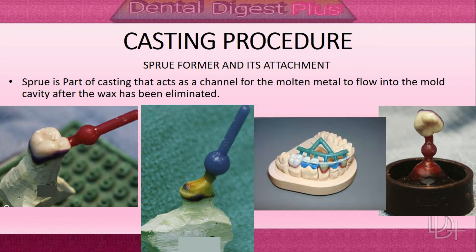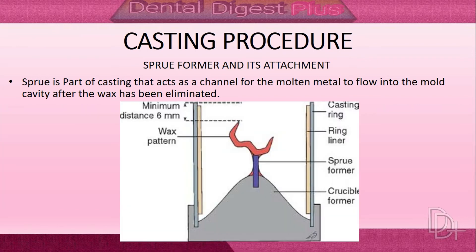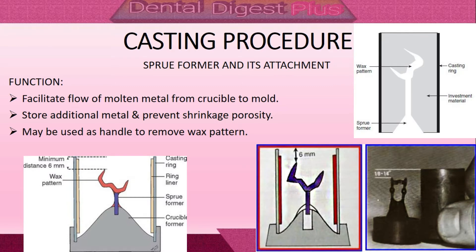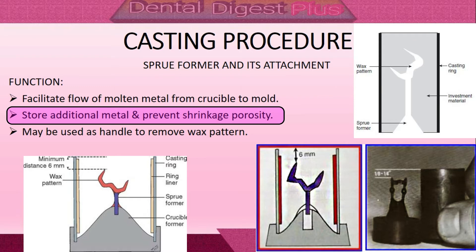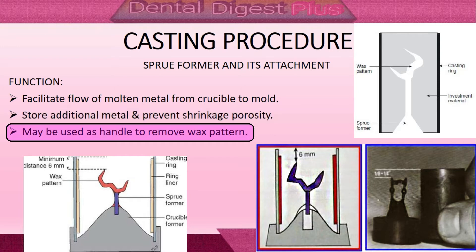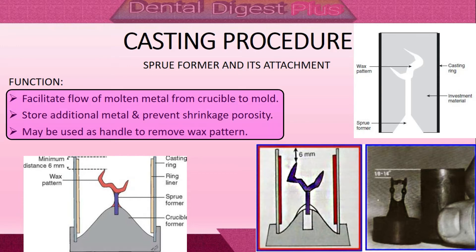The fifth step is sprue former and its attachment. The sprue is part of the casting that acts as a channel for the molten metal to flow into the mold cavity after the wax has been eliminated. Functions of the sprue include: facilitating the flow of molten metal from crucible to mold, storing additional metal to prevent shrinkage porosity, and serving as a handle to remove the wax pattern from the cast.